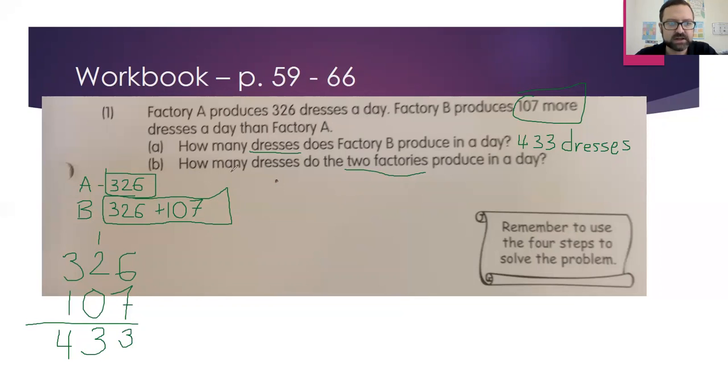Next it says how many dresses do the two factories produce in a day. So once again, I'll go back and refer to my model. I'm going to add a question mark to my model because we don't know how many dresses they both make in a day. But I know that Factory A makes 326 and Factory B makes 433 now. So I'm just going to add these numbers together: 326 plus 433. 6 and 3 is 9, 2 and 3 is 5, and 3 and 4 is 7. So my big number for both factories is that they make 759 dresses in one day.